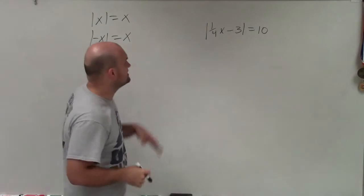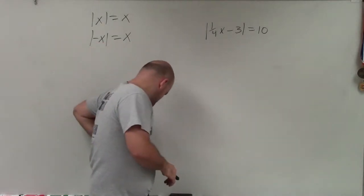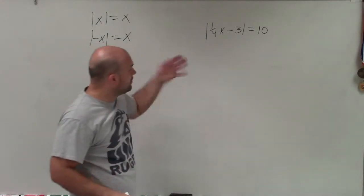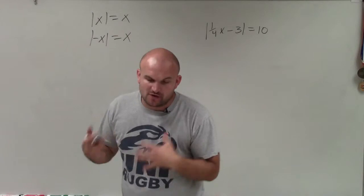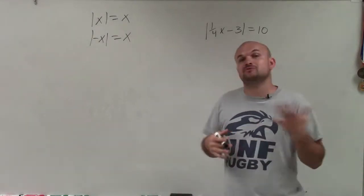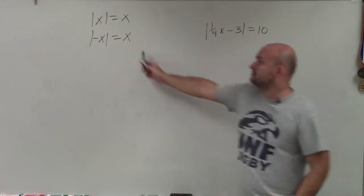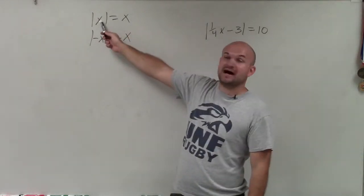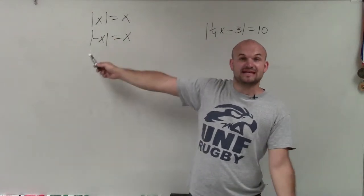Welcome, ladies and gentlemen. In this case, what we have is one-fourth x minus 3 equals 10. When solving an absolute value equation, we want to set up two cases: one case where our absolute value is positive, and one case where our absolute value is negative.